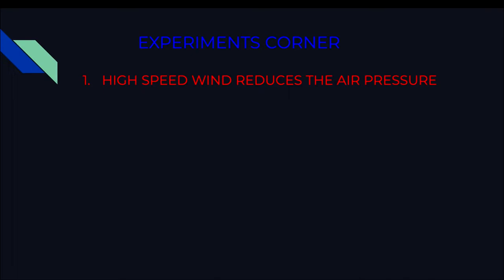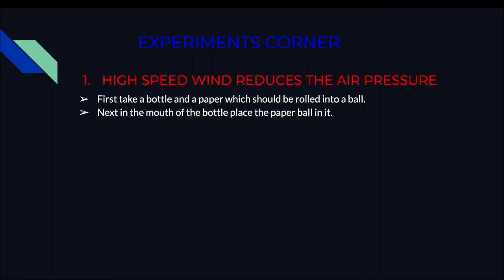First, high speed wind reduces the air pressure. Let us see how it happens. First, take a bottle and paper which should be rolled into a ball. Next, in the mouth of the bottle, place the paper ball in it.